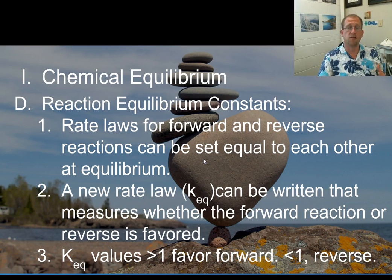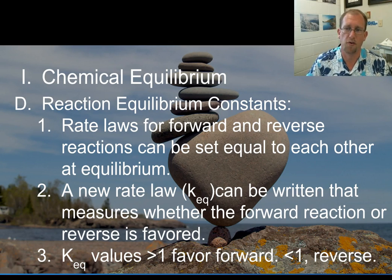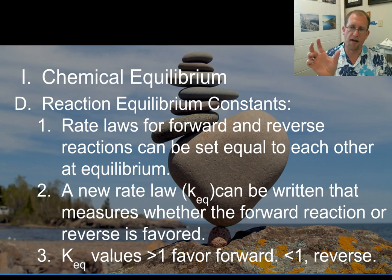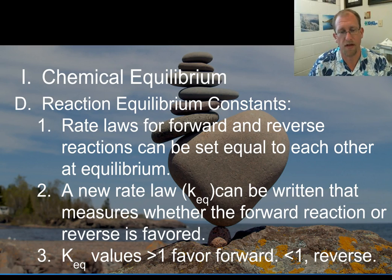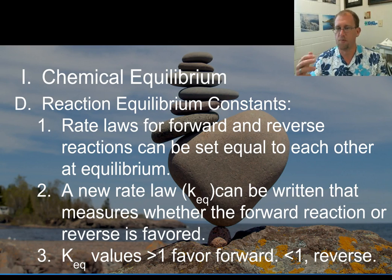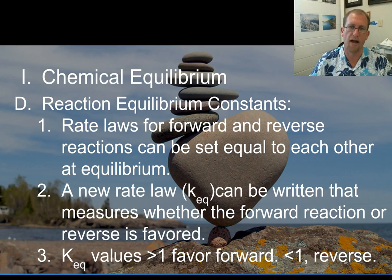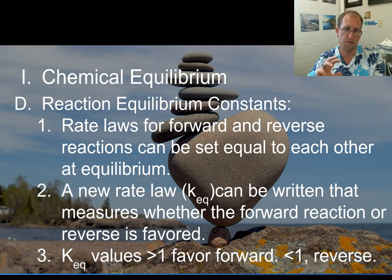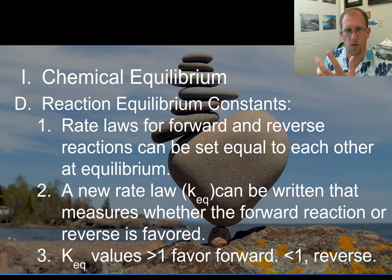Reaction equilibrium constants — now we're going to try to express this concept mathematically. Rate laws for the forward and reverse reactions are compared to each other because at equilibrium they equal each other. So the forward reaction rate equals the reverse reaction rate, and we can set those two as equal to each other at the point of equilibrium, and then we can rearrange that mathematically to express a new reaction constant. We use Keq for the reaction constant at equilibrium and express how fast the reaction is going forward versus reverse — a ratio expression where we can see if it's favoring one direction or the other, or if it's balanced.